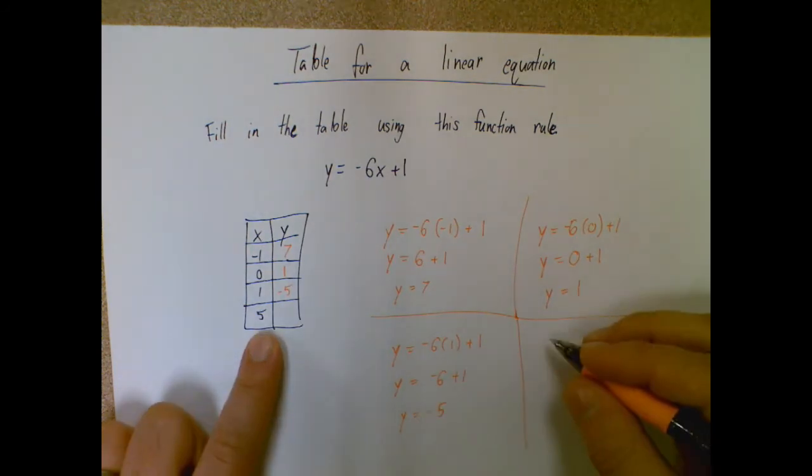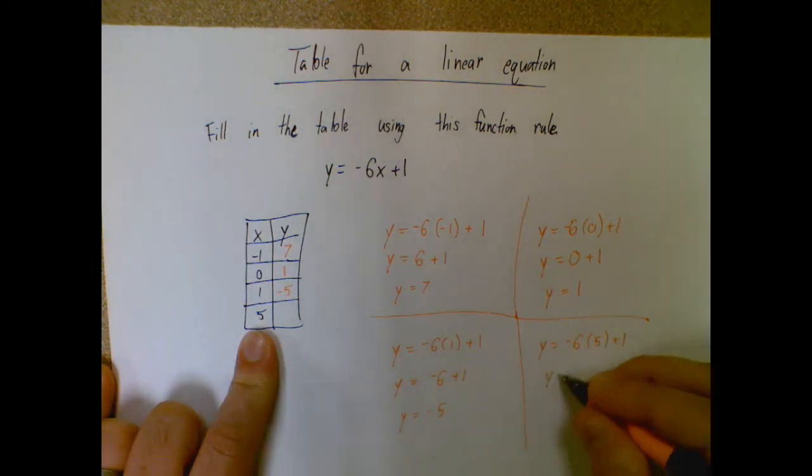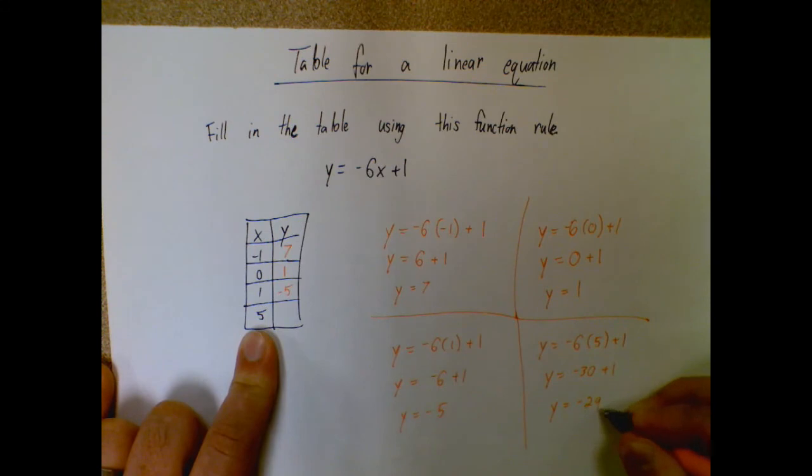Okay, and last but not least, I'm going to do it with my input of five. Y equals negative six times five plus one. Negative six times five is negative thirty. Bring down the plus one, I end up with negative twenty-nine.